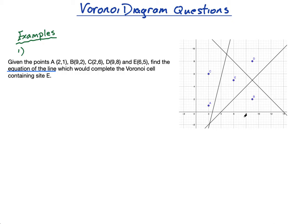I'm going to draw the line — this will not be perfectly accurate — but I just want to show you the kind of thing we're trying to get. We're trying to find the equation of the line that goes through the midpoint of A and E, somewhere around there. That completes the cell, so now E — this is the cell in which E lies. How do we find the equation of that line? We've basically changed this question into an equation of a perpendicular bisector question.